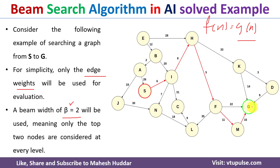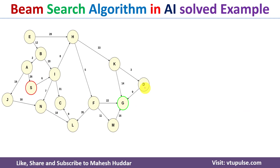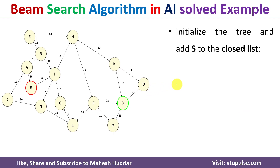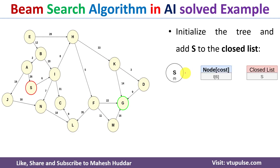The initial state is S. We create a tree with the initial node S and add S to the close list. g(S) = 0 because the path cost from S to S is 0. The only node reachable from S is I, so we add I to the node data structure with a cost of 6.